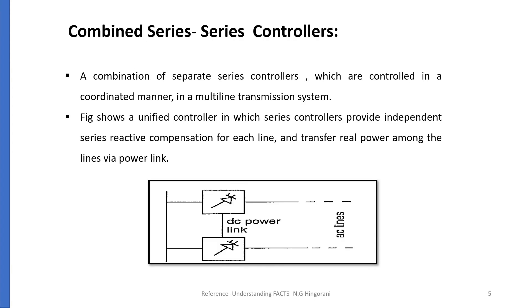Combined Series-Series Controllers could be a combination of separate series controllers which are controlled in a coordinated manner in a multi-line transmission system, or a unified controller. In this case, series controllers provide independent series reactive compensation for each line but also transfer the real power among the lines via the power link. Real power transfer capability of these controllers is referred to as interline power flow control. This makes it possible to balance both the real and reactive power flow in the lines, helping to maximize the utilization of the transmission system. The term unified here means the DC terminals of all controllers are connected together for real power transfer.